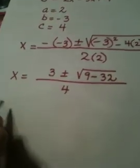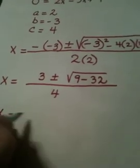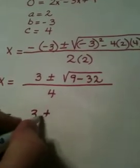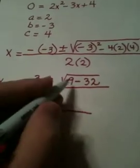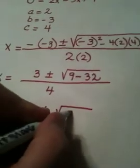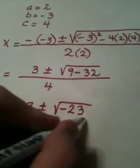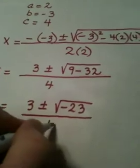So what we end up getting, we have 3 plus or minus the square root of 9 minus 32 is a negative 23, and this is all over 4.